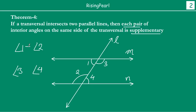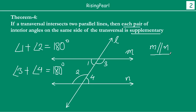So when we say each pair: one pair is angle one and angle two, and the other pair is angle three and angle four. Each pair of interior angles on the same side is supplementary, meaning when you add them you should get 180 degrees. So what is given is that M is parallel to N, L is a transversal, and we have to prove angle one plus angle two equals 180 degrees, and also angle three plus angle four equals 180 degrees.